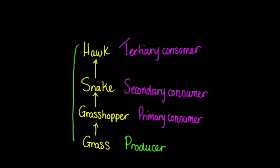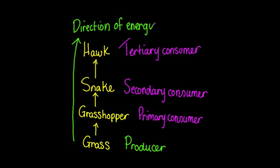The energy flows from the producers to the top consumers, which may be tertiary or quaternary consumers. In order for the food chain to function, there must be a large number of producers and a fewer number of consumers at subsequent trophic levels.